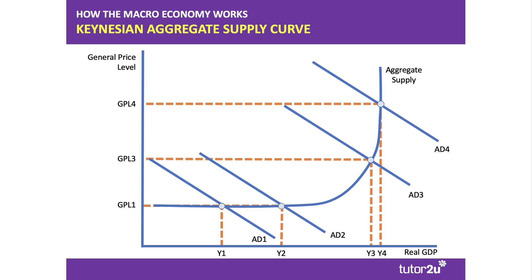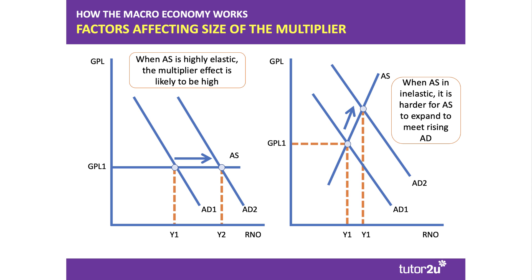You'll certainly need to go back to your aggregate demand and aggregate supply framework. It depends on whether you've gone for a Keynesian approach or a neoclassical model — it doesn't really matter as long as you're consistent and clear. Here's a Keynesian aggregate supply curve where the elasticity of supply changes at different levels of spare capacity in the economy: elastic at levels of output Y1 and Y2, inelastic at Y3 and Y4. You can use AD/AS analysis to help explain the size of the multiplier effect — you could actually use a Keynesian curve for that.